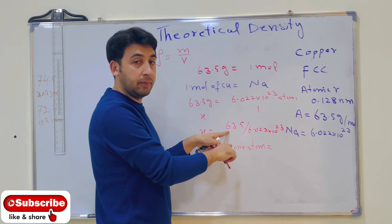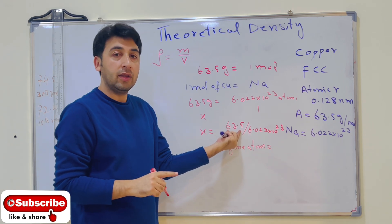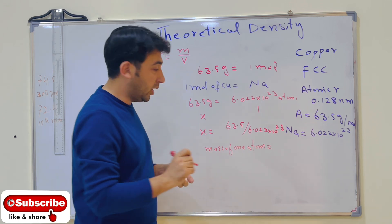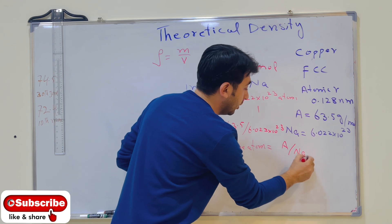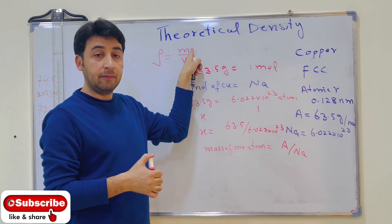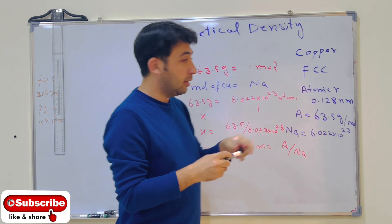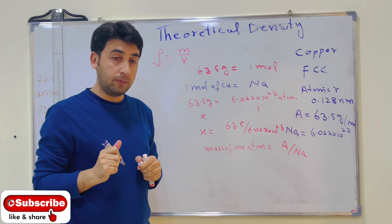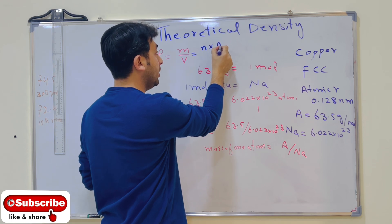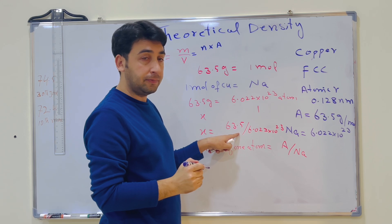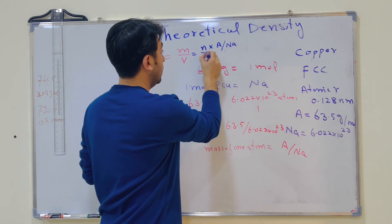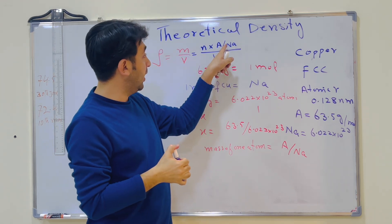We can generalize this: the mass of one atom equals the atomic mass divided by Avogadro's number. This applies whether it is copper, aluminum, gold, or any element. Now, density is mass per unit volume — the mass of the unit cell. In an FCC unit cell there are four atoms, so the mass equals n (number of atoms in a unit cell) multiplied by atomic mass, divided by Avogadro's number.